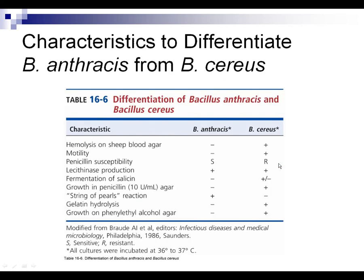To differentiate Bacillus anthracis from Bacillus cereus — another Bacillus that causes foodborne disease — note that anthracis is non-hemolytic on blood agar while cereus is hemolytic. Anthracis is non-motile while cereus is motile. Both produce spores.